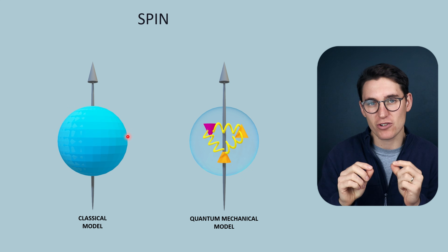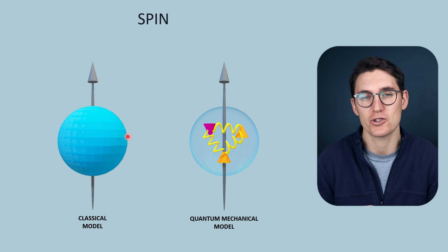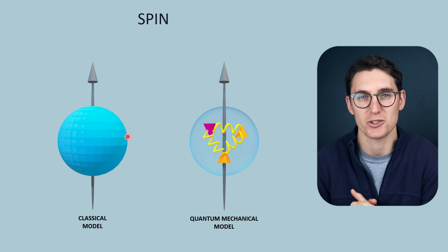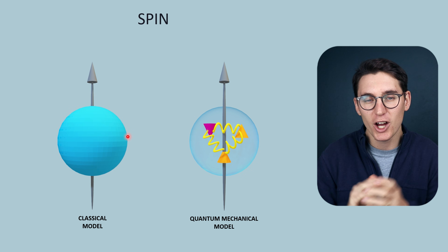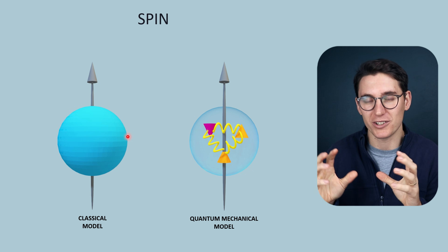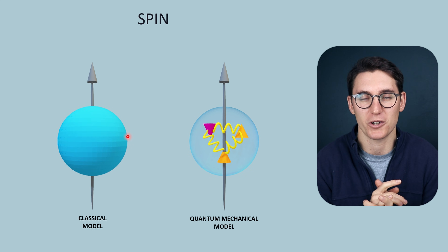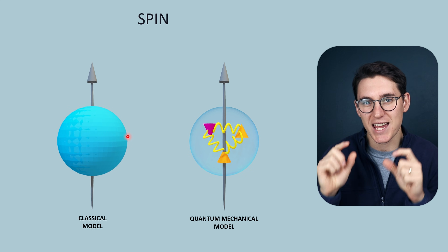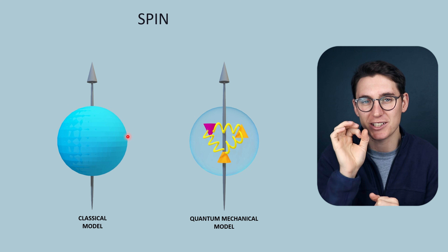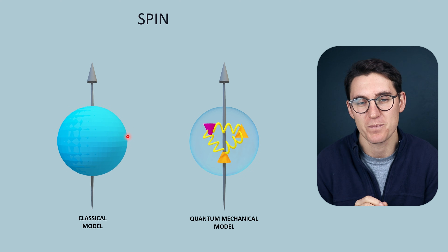Now how do we go about describing that magnetic moment within a neutron? We need quantum physics in order to do that. Quantum physics is a bizarre world — it's less intuitive than the classical model — and within quantum physics every property can be broken down into a discrete measurable value.